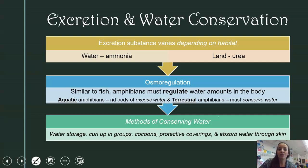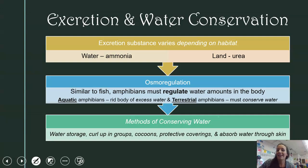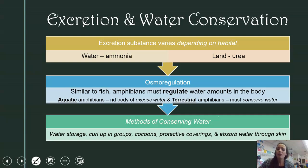Excretion and water conservation in amphibians is similar to fish. Depending on where they are determines their excretion substance — in the water they excrete ammonia like fish, whereas on land they excrete urea, more common in reptiles and birds. Osmoregulation is also similar to fish: aquatic amphibians and tadpoles must rid their body of excess water, while terrestrial amphibians must conserve it. They have several methods of conserving water: storing it in their bodies, curling up in groups, making cocoons, protective coverings, and absorbing water through their skin.